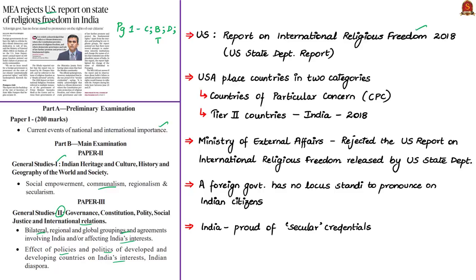Countries of particular concern are those that commit systematic ongoing violations of religious freedom. The tier two list covers countries that do not yet require that designation but need close monitoring due to the nature and extent of their violations. India has been placed as a tier two country by the US Commission on International Religious Freedom for 2018. The report highlighted how the rights of Muslim and Christian communities are affected in India. Today's news is that India's Ministry of External Affairs has rejected this report.